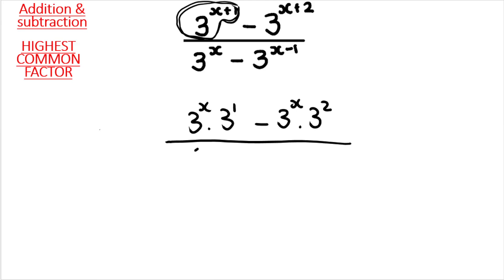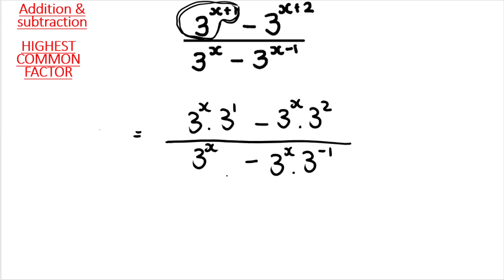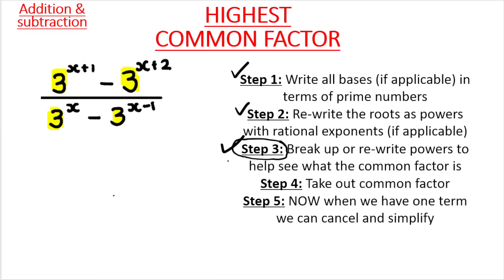At the bottom, we have three to the power of x, then minus, then three to the power of x minus one — which is three to the power of x times three to the power of negative one. Some students don't need to do this on paper, but for others it helps to see it in this format. That is step three done.